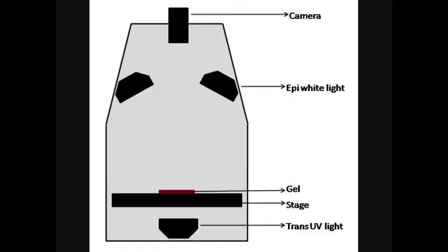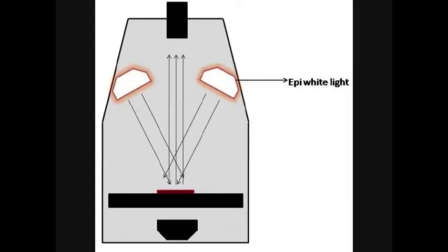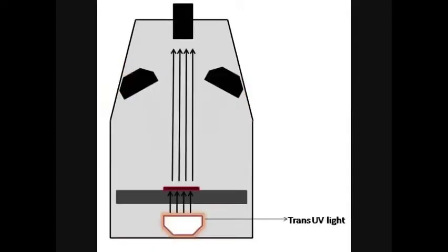The equipment required includes a dark chamber, camera, UV and light illuminator, a stage to place the gel, and a computer to view the image obtained. The epi-white light is used to view the gel's position in the imager, where the lights are placed above the gel. The trans-UV light in the imager helps fluoresce the ethidium bromide-bound molecules and image them. These lights are placed below the gel.